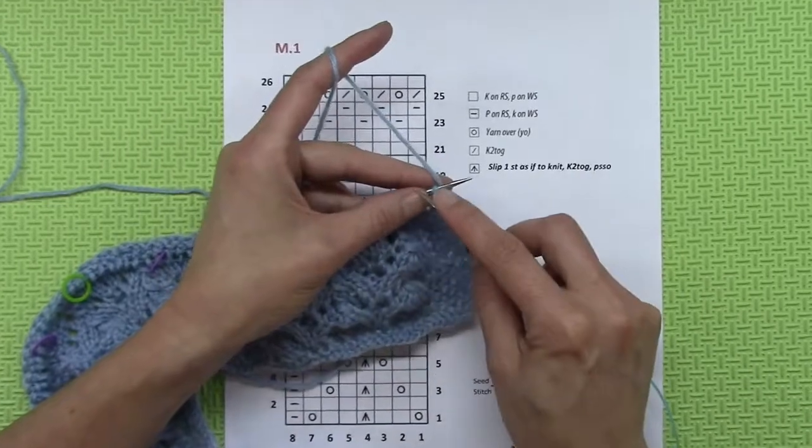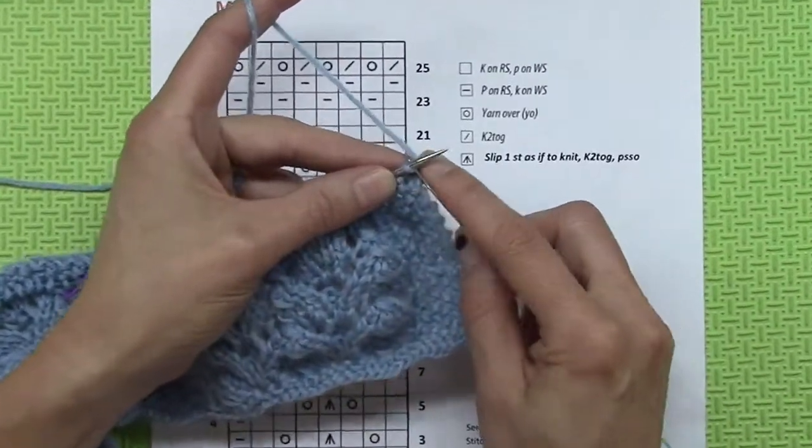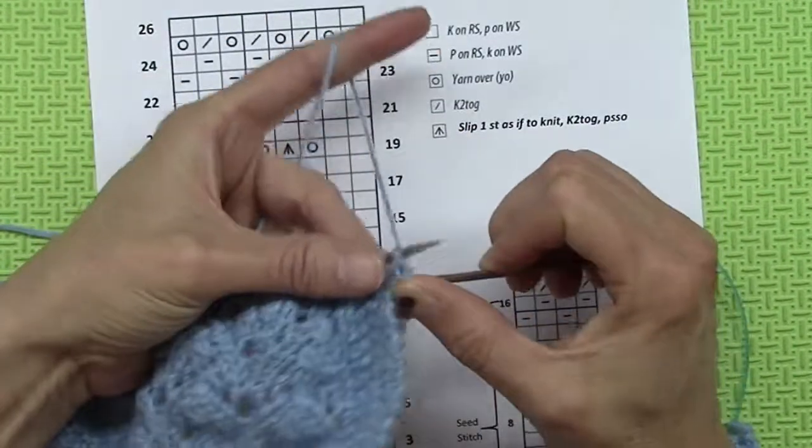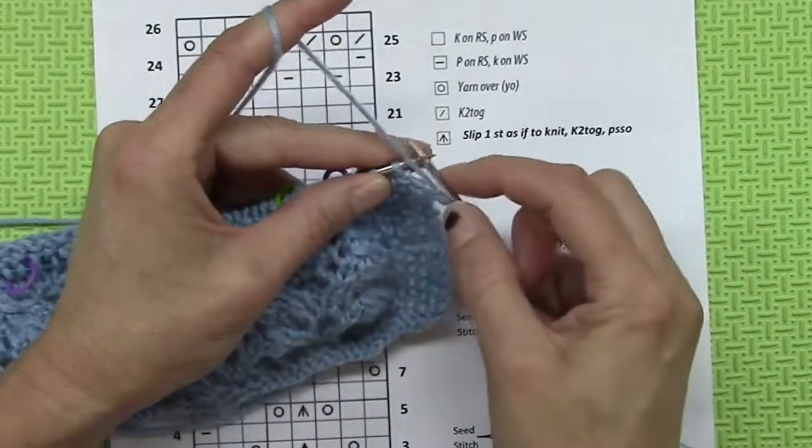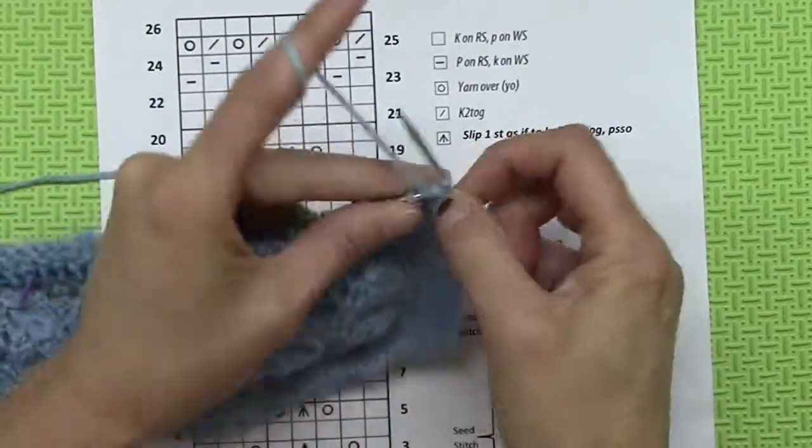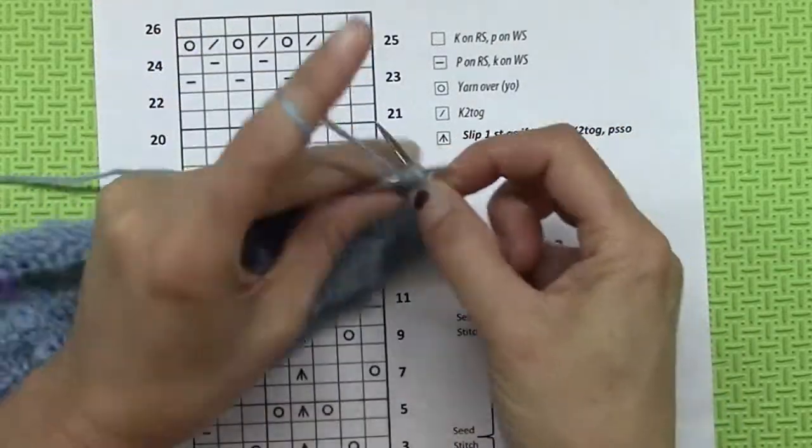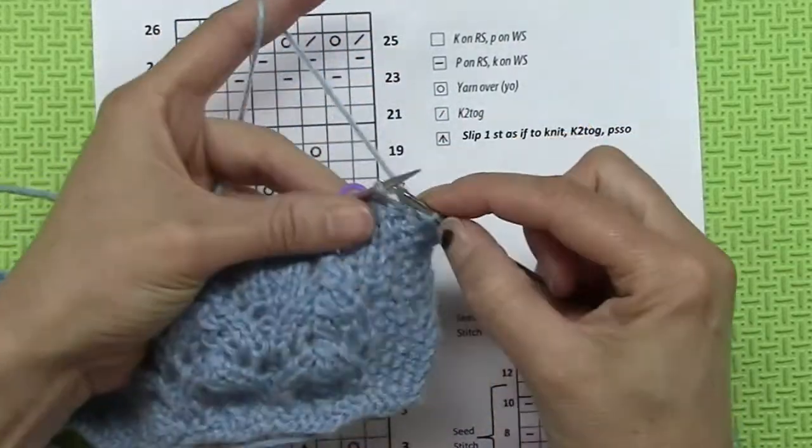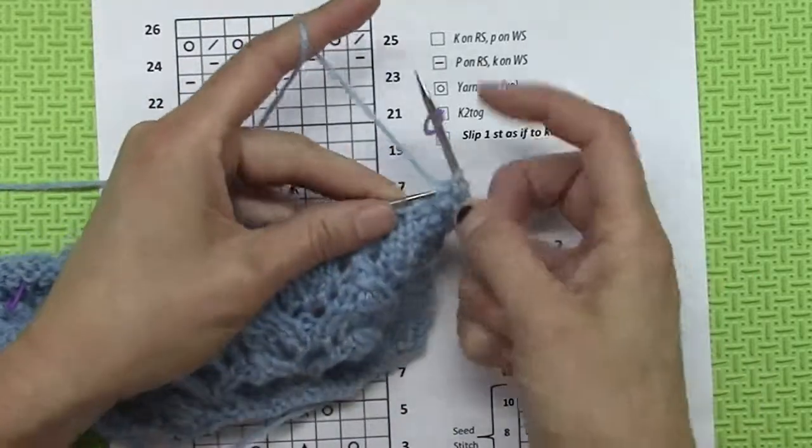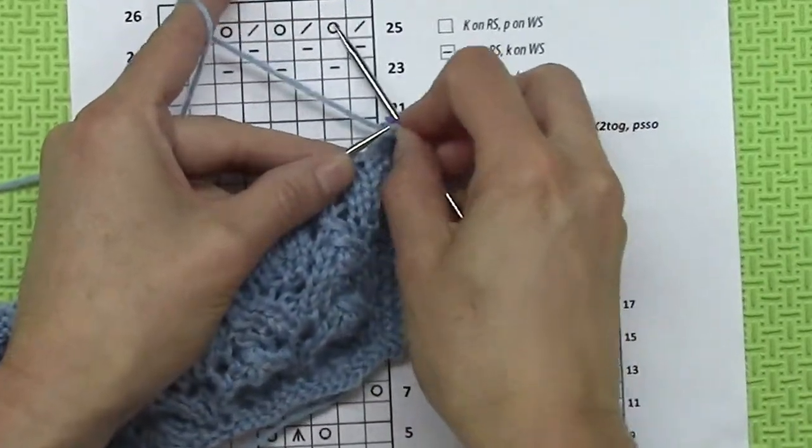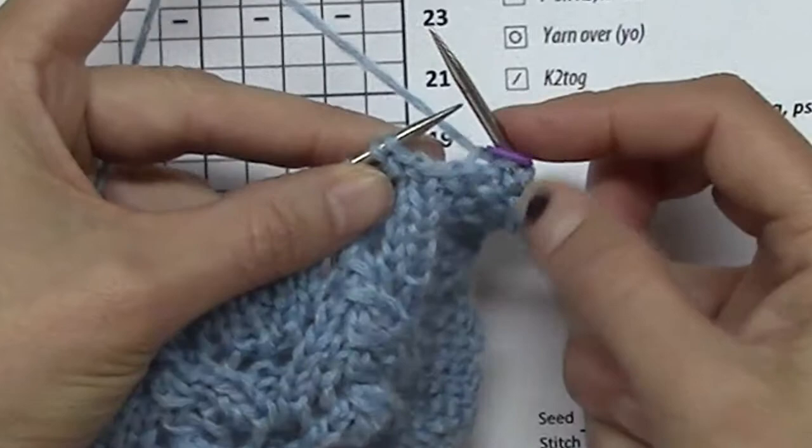Always think about the buttonholes. I start with the seed stitch on row 25: knit, purl, knit, purl, knit, move the marker. Then two together, yarn over - you're going to repeat that over and over.